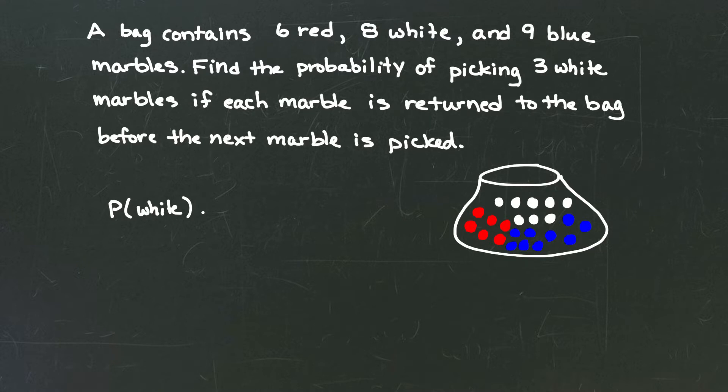Well, we know we have a fraction and in the numerator we're gonna put the number of possible white marbles there are. How many possible events are there that are white? And there's one, two, three, four, five, six, seven, eight. So we have eight possible marbles as my numerator.